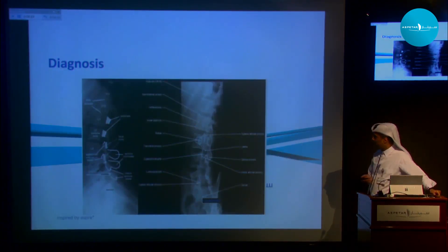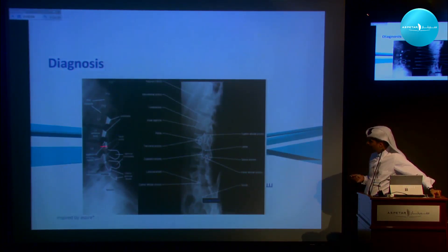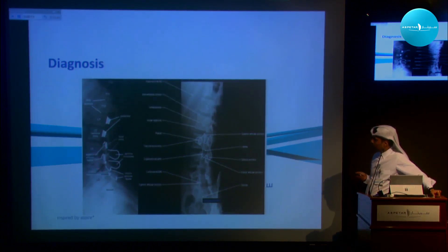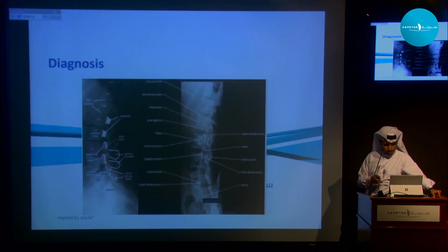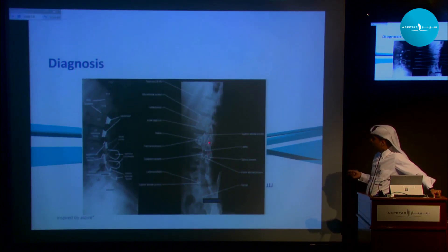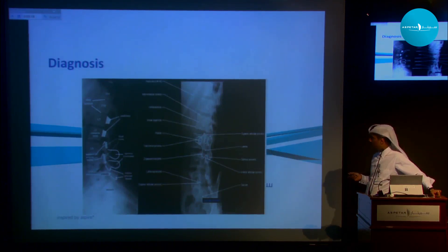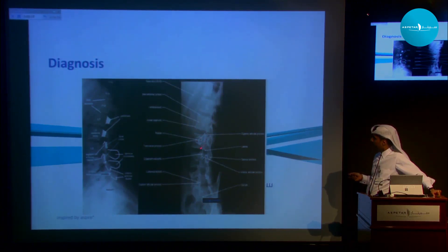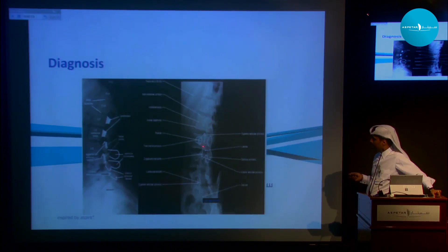On x-ray, if you draw a line on the posterior border you will see the line is broken. On the oblique view, we call this the Scotty Dog appearance. This is the head of the dog, this area is the pars, and when there is a fracture you will see that the neck is broken.